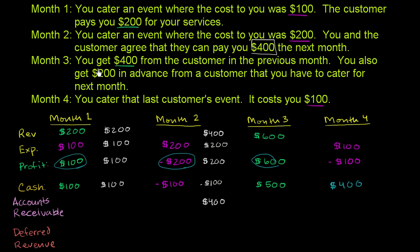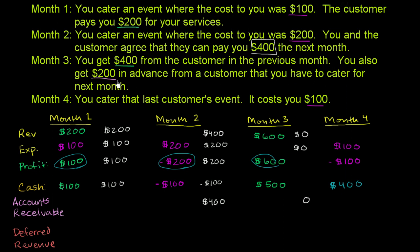Now let's go to month three. You get $400 from the customer from the previous month. With cash basis you would add that to revenue, but here we already accounted for it in accounts receivable. Because you got the $400 in cash, it disappears from receivables and goes into cash. You also get $200 in advance from a customer that you have to cater for the next month. Since you did no catering in month three, you have zero revenue and zero expenses. Accounts receivable goes to zero and goes to cash, so the negative $100 plus $400 becomes positive $300.